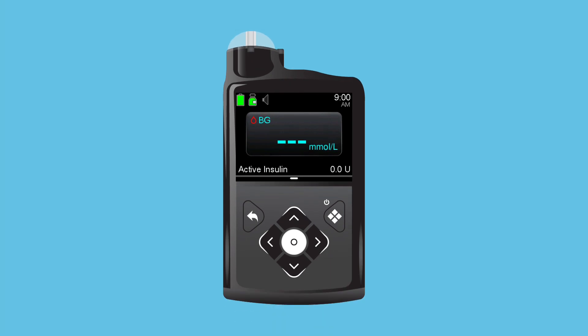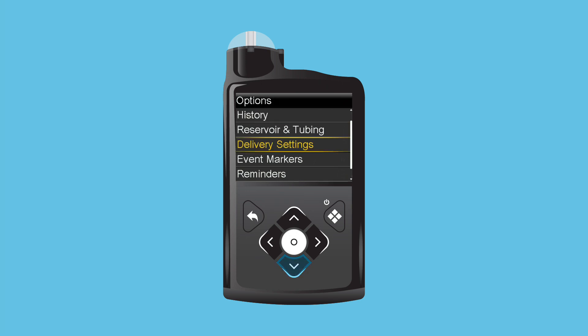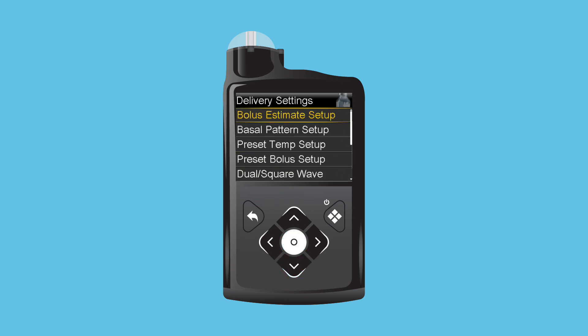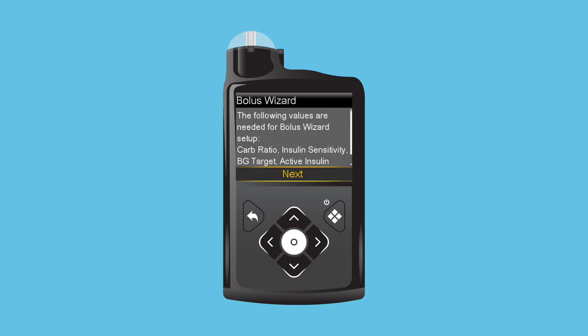First, Andy must turn on the bolus wizard feature. He begins by pressing Select. He scrolls down and selects Options. He then selects Delivery Settings and Bolus Estimate Setup. He selects Bolus Wizard to turn this feature on. He reads through the message and selects Next.